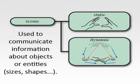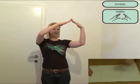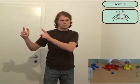Iconic gestures are used to communicate information about objects or entities, such as size or shapes. In iconic static gestures, this is done by static hand postures, like in showing the shapes, the sizes, or spatial relationships of objects.